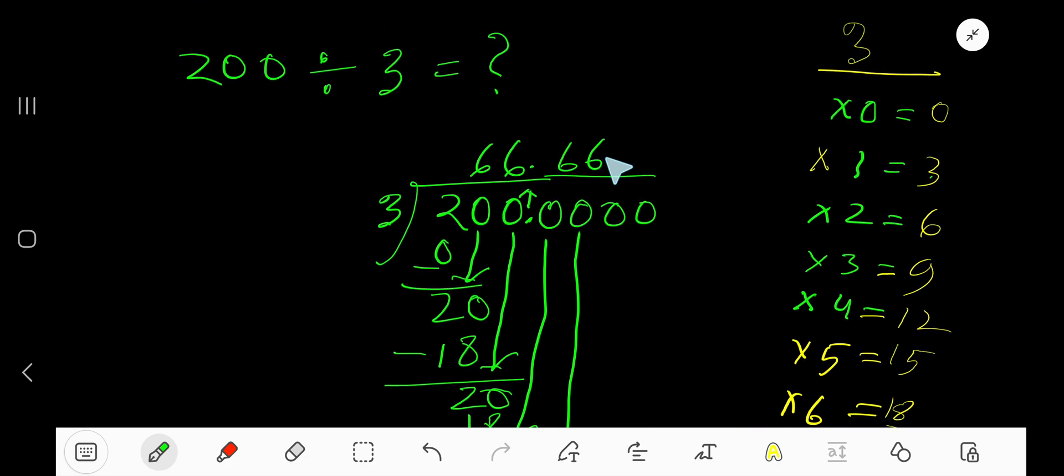Since we see that this 6 is repeating, you can place 3 dots here. That means this process is continuing. Since 6 is repeating, you can place a bar here.